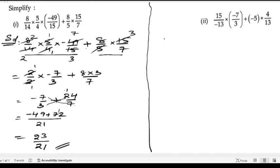In the second problem we have: 15/(-13) × (-7/3) + (-5) × 4/13. Again we have two terms separated by a plus sign. Three fives are fifteen.